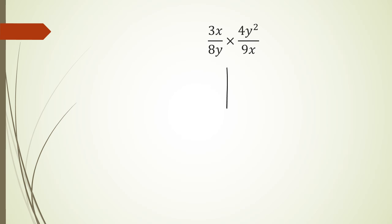Now as usual I'm going to show you guys the long method of doing this and of course the quick way of doing it as well. So I'm going to expand this all out. 3x can be written as 3 times x and 4y squared could be written as 4 times y times y. And that's all divided by 8y, so 8 times y multiplied by 9 times x.